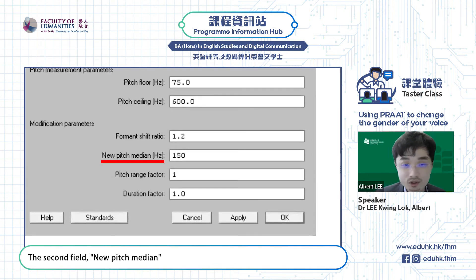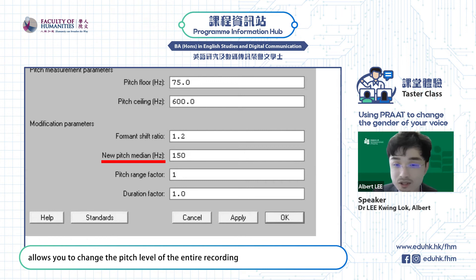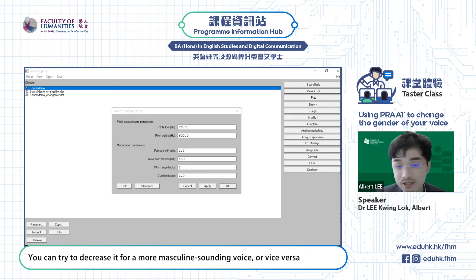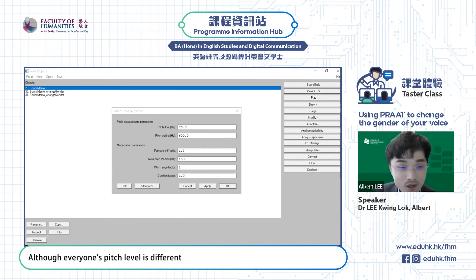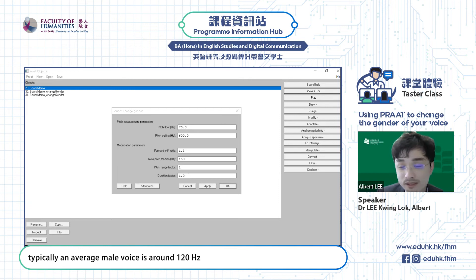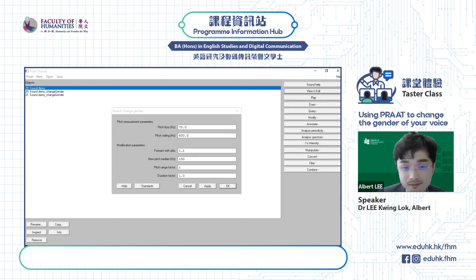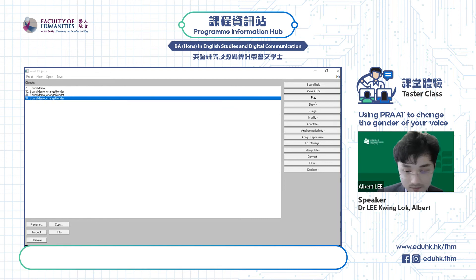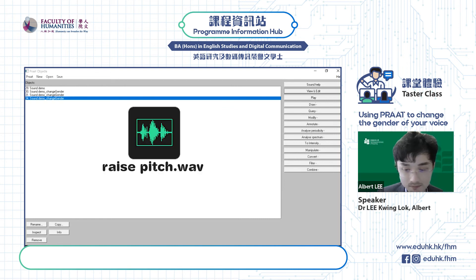The second field, New Pitch Median, allows you to change the pitch level of the entire recording. You can try to decrease it for a more masculine sounding voice, or vice versa. Although everyone's pitch level is different, typically an average male voice is around 120Hz and an average female voice around 200Hz. "Phonetics is fun."